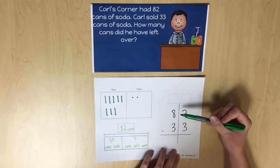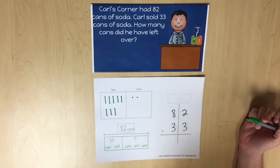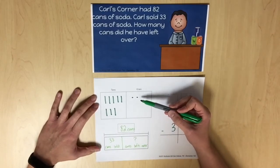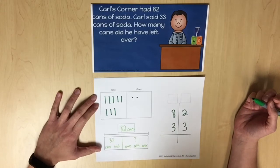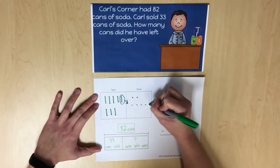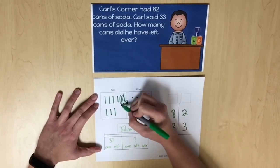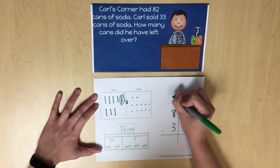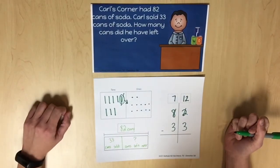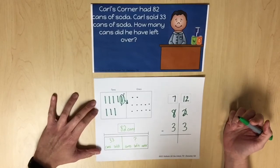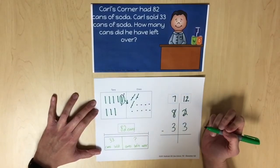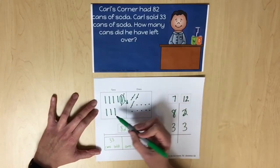Ensure that students are putting the digits from each number in the correct place value column. As students begin to subtract in the ones place, they should notice that there aren't enough ones to subtract 3 from 2. Students must regroup one 10 into 10 ones. We're going to represent the regrouping on our standard algorithm — we regrouped one 10 and now have 12 ones. After regrouping, students can subtract 3 ones from the 12 ones, and we can see that there are 9 ones remaining. 3 tens can be subtracted from 7 tens.